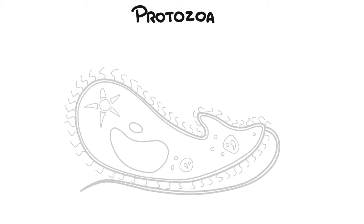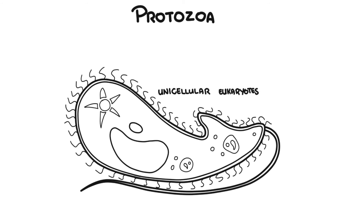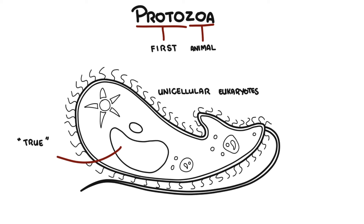Protozoa are single-celled eukaryotic organisms. Protozoans are a class of protists, and so are other organisms such as slime molds and algae. All these are unicellular eukaryotes. Protozoan comes from the Latin and Greek to mean 'first animal,' thought to be the earliest animal to have existed. Protozoans are eukaryotes and therefore possess a true or membrane-bound nucleus. However, protozoans have no cell wall.